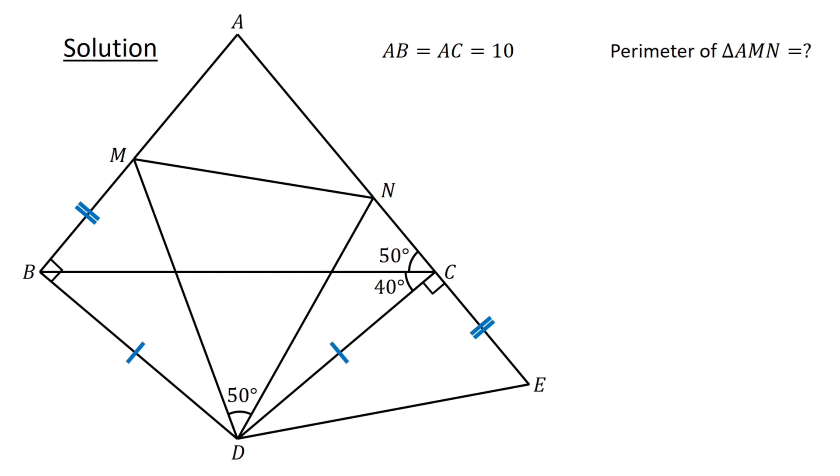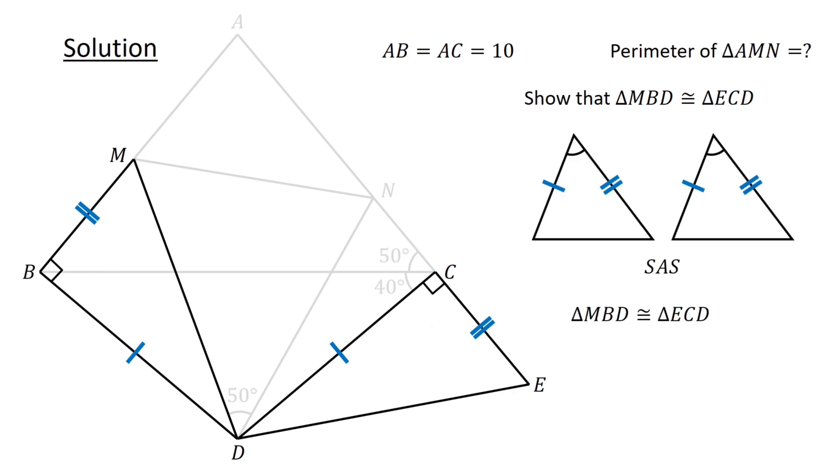Next, connect D to E and consider triangles MBD and ECD. Let us show that triangle MBD is congruent to triangle ECD. Since BD equals CD, MB equals EC, and the included angles are equal, therefore by the SAS congruency test, triangle MBD is congruent to triangle ECD.